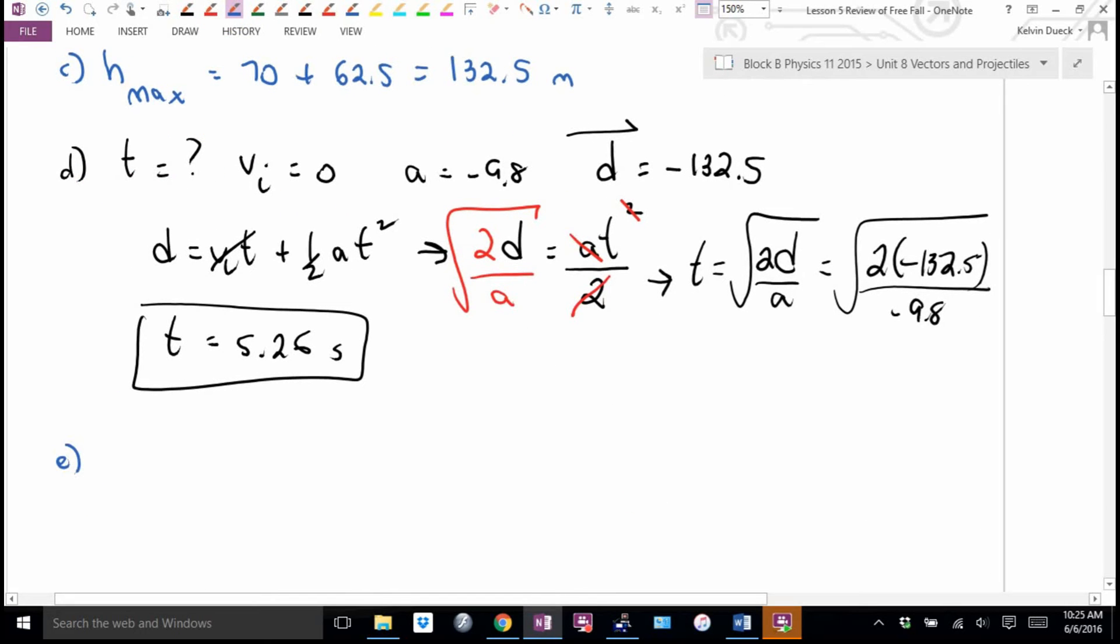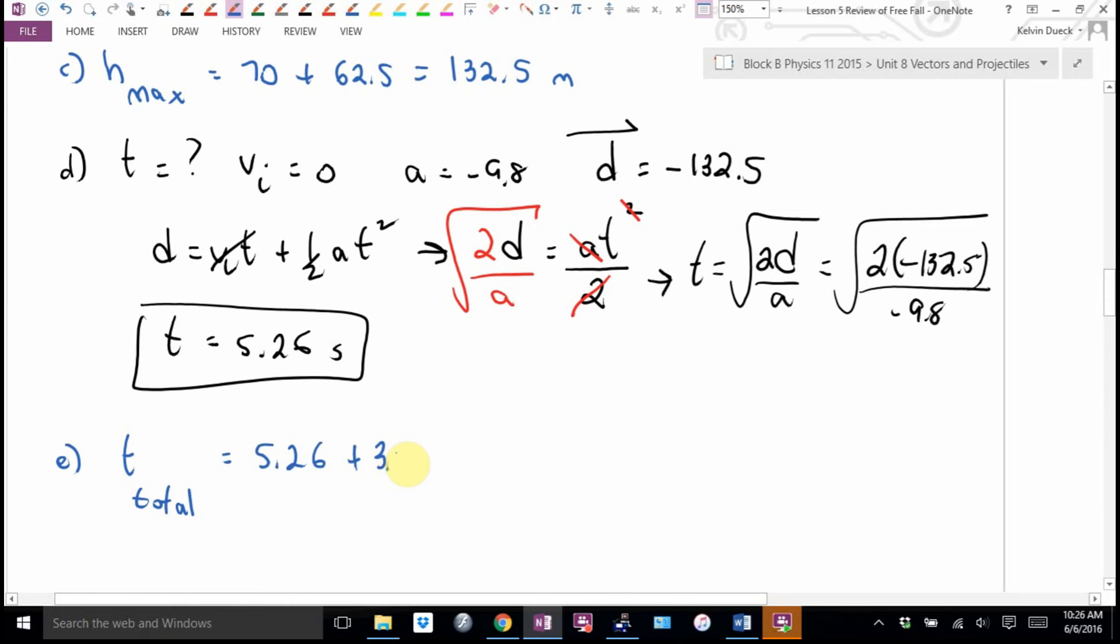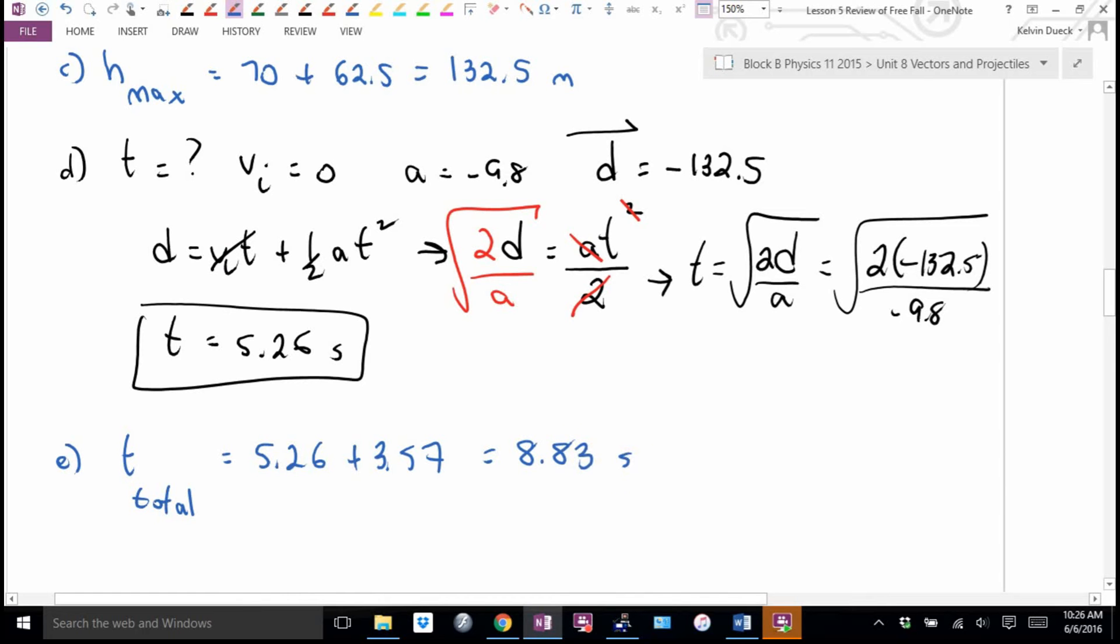Brayden, what does E want me to find? I don't think I need to do any calculating as much as just find some stuff I already have. What's the total flight time? That's not the total flight time. That's the time from the top to the bottom. Plus, what was it? 3.57. So this number, plus 3.57. 8.83.